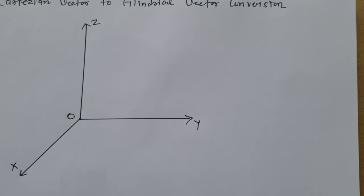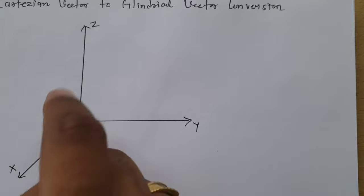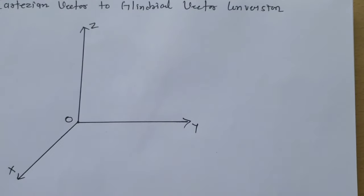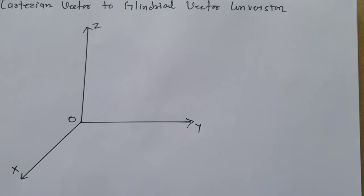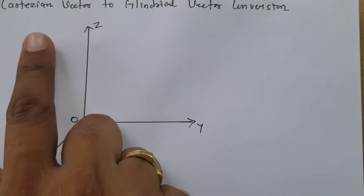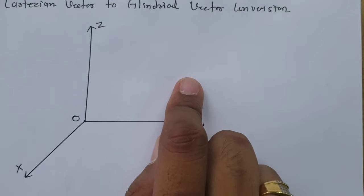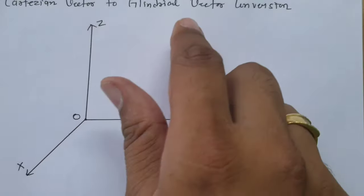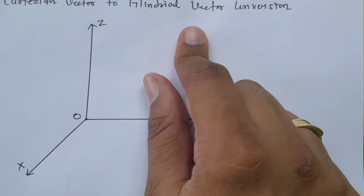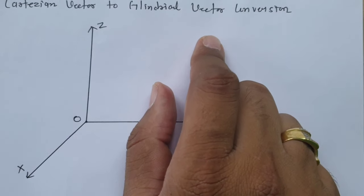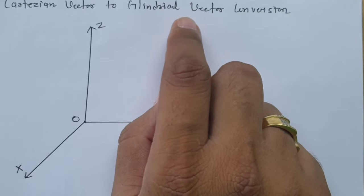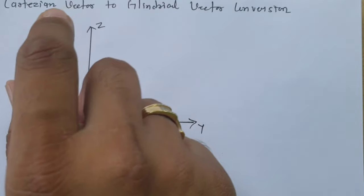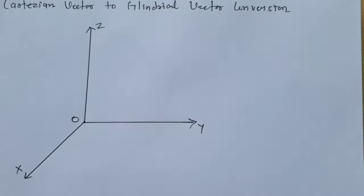Welcome to the Electromagnetics Playlist. I, Professor Itesh Dolakya, am going to explain Cartesian Vector to Cylindrical Vector Conversion. In the previous session, I already explained what a Cartesian Vector is and how to convert a Cartesian Point into a Cylindrical Point. I have not explained Cartesian Vector to Cylindrical Vector — that is what we will cover now.